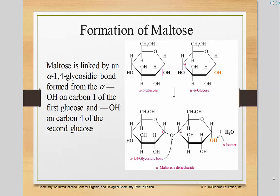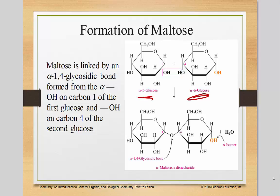When we look at alpha and beta of disaccharides, we're looking at the very first carbon of the first part of the molecule. There are two monosaccharides here; we're looking at the one on the far right. It's considered what's called an alpha-1,4-glycosidic bond — that's what's holding the two monosaccharides together. Alpha means that the OH is coming down, referring to that first carbon. That first carbon is alpha, and it's bonding to the fourth carbon.